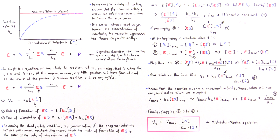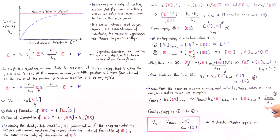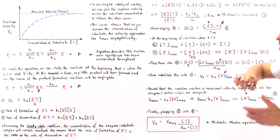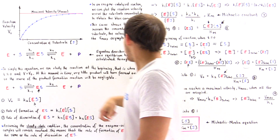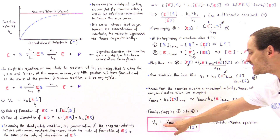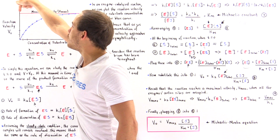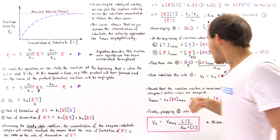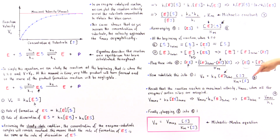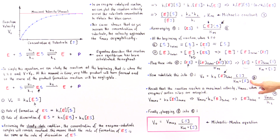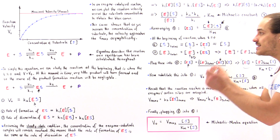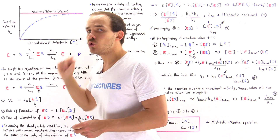If we take equation eight and replace E-total with V-max divided by K2, the K2's will cancel, and we're left with this equation: V-naught — which is the Y value on the curve — is equal to V-max, which is the maximum Y coordinate, multiplied by the concentration of the substrate S, divided by Km plus the concentration of substrate S. And this is the equation that describes this blue curve.